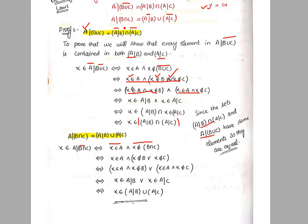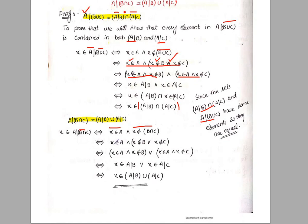Now here we have the 'or' (∨) to use. So x belongs to A and x does not belong to B, or x belongs to A and x does not belong to C.